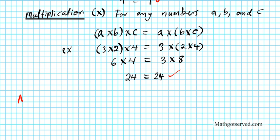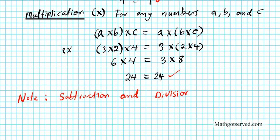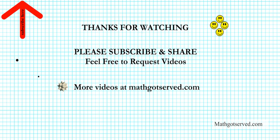Note that subtraction and division are not associative, because you can find examples where reversing the grouping results in an inequality. You can try it out yourself — take some numbers and reverse the grouping, and you'll find it's easy to show that subtraction and division are not associative. Thanks for watching this video. Please subscribe and share to get future updates on new clips like this. A collection of clips can be found at madgoeserve.com. Have a wonderful day.